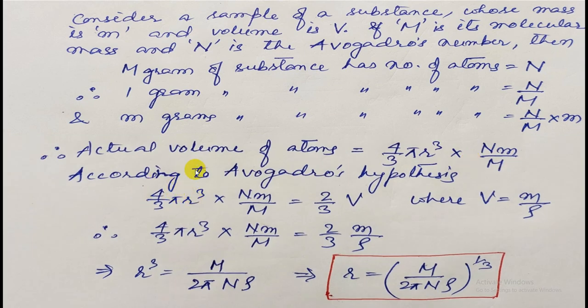Now the actual volume of the atoms: for a single atom the volume is 4/3 pi r cubed, where r is the radius which we are going to calculate. Therefore, for the total number of atoms present in m grams, the actual volume will be 4/3 pi r cubed times N by M times m.